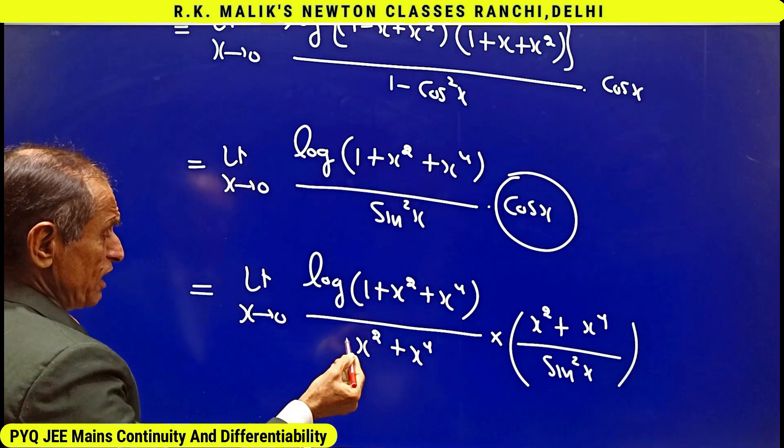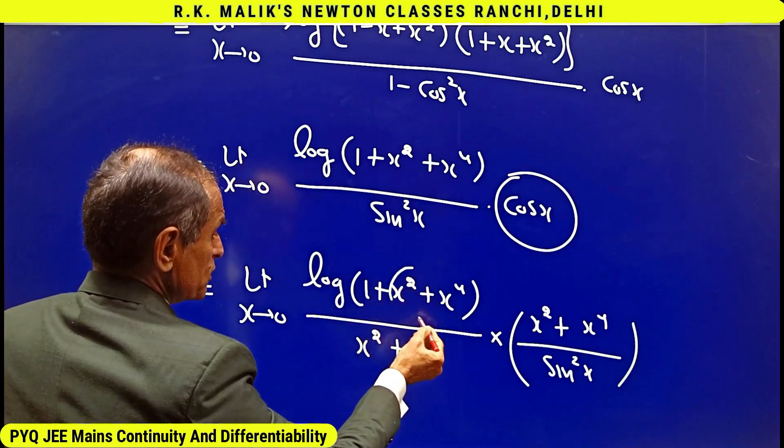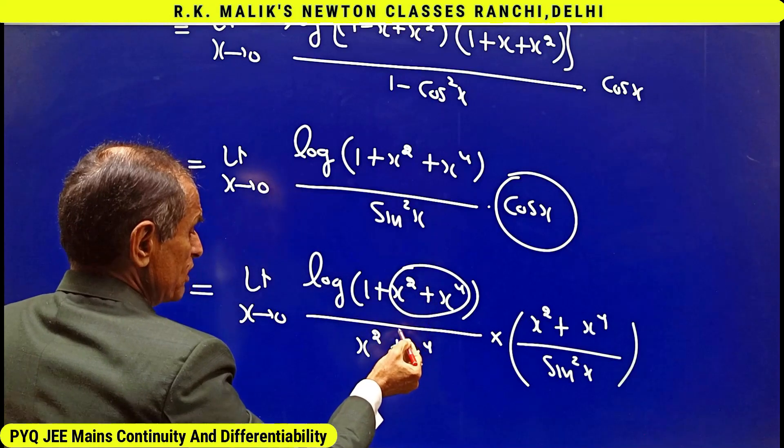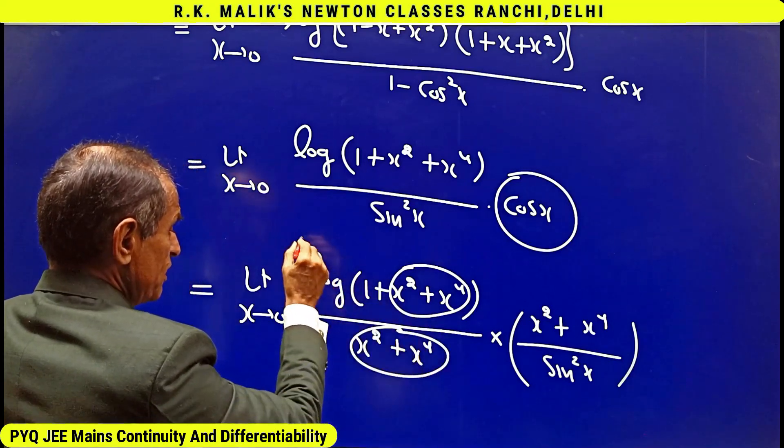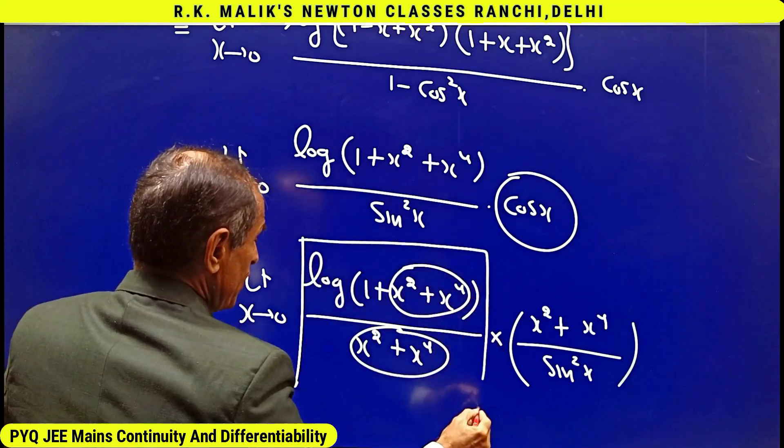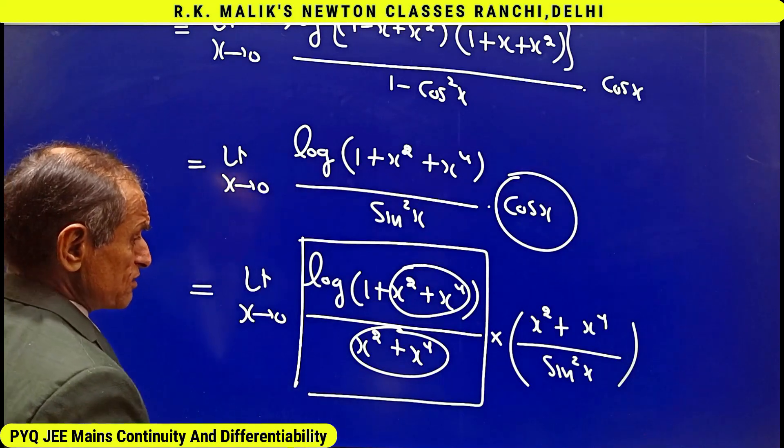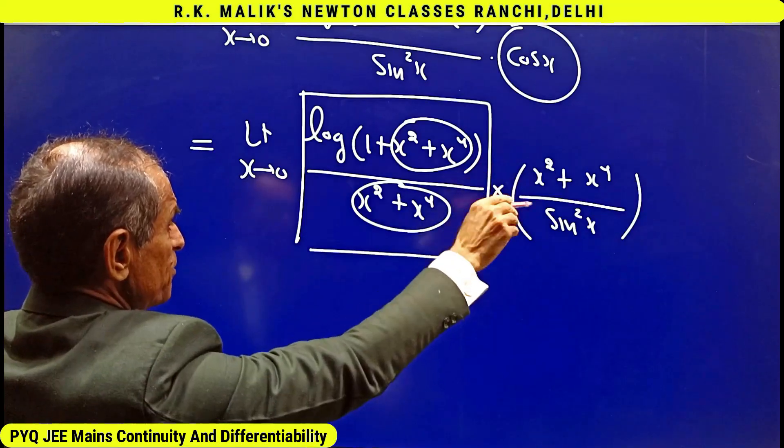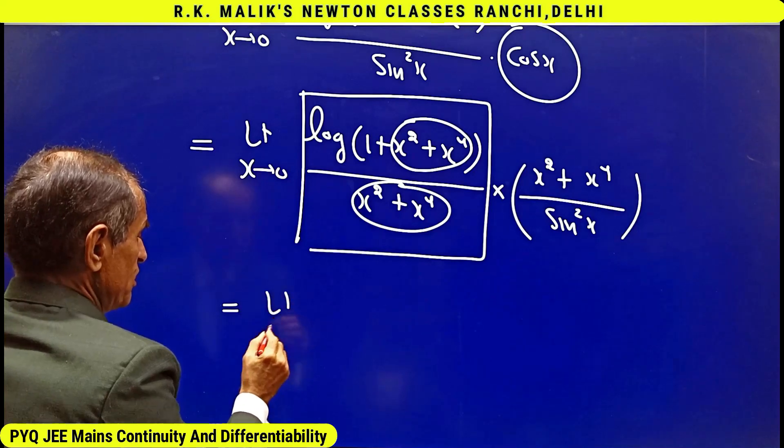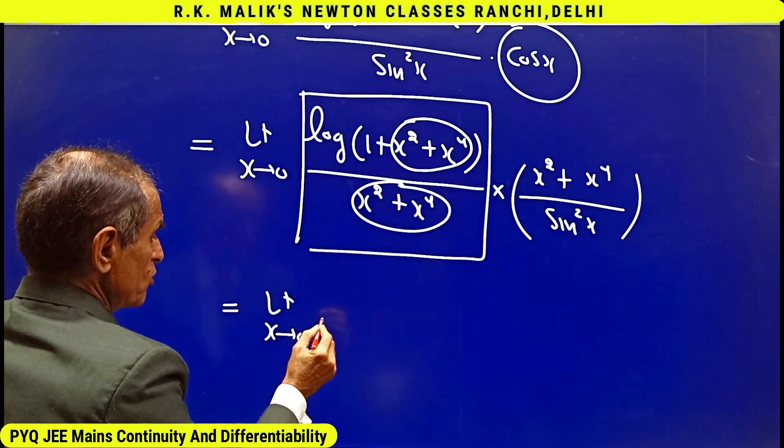And because as x tends to zero, this whole tends to zero and this is the same as this, hence using the formula, I get the value of this as 1. And the limit of this part I get is limit x tends to zero